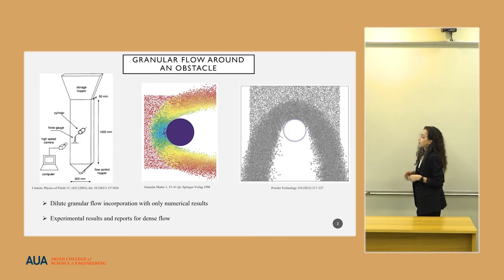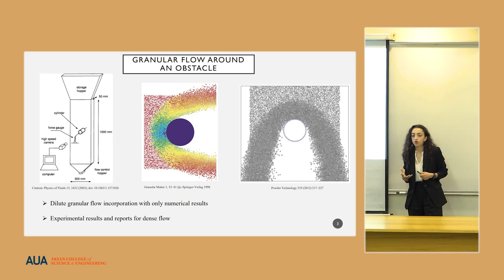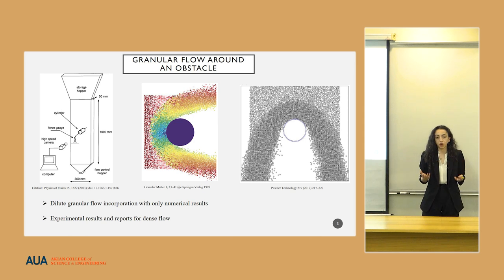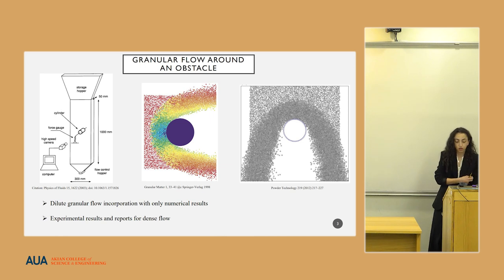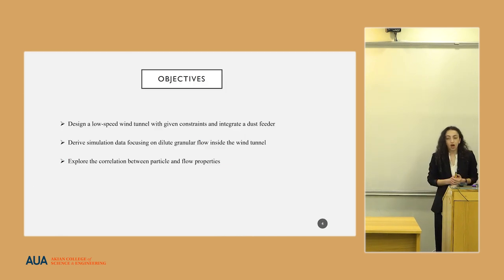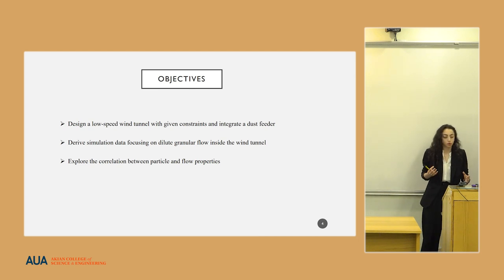Although substantial research is mainly focused on circular flow around an obstacle, and even the ones that incorporate multi-particulate flow don't have any experimental data or experimental results. To address this issue, our aim is to design a low-speed wind tunnel that will incorporate a dust feeder, and correspondingly we will derive simulation data that focuses on the dilute granular flow inside the wind tunnel. Finally, we will explore the correlation between particle and flow properties.